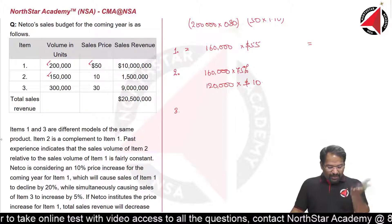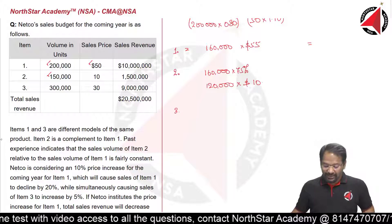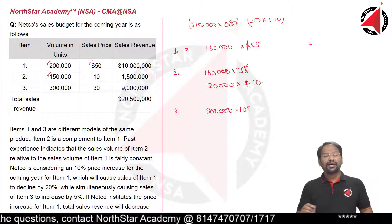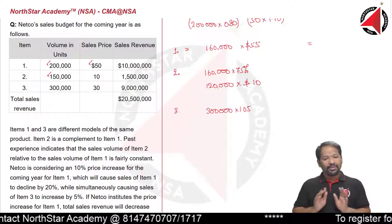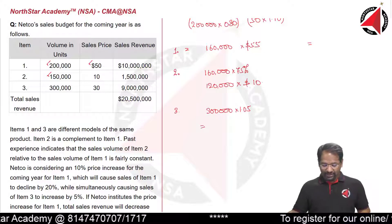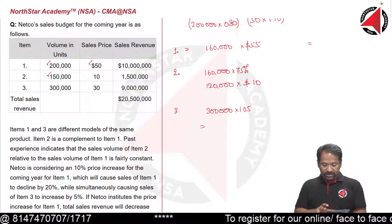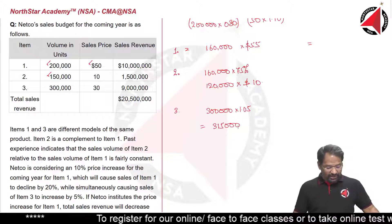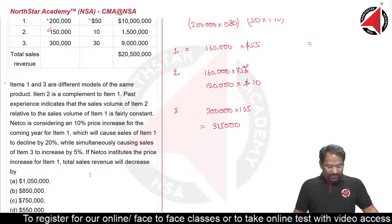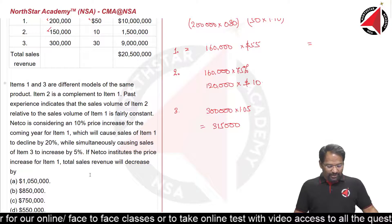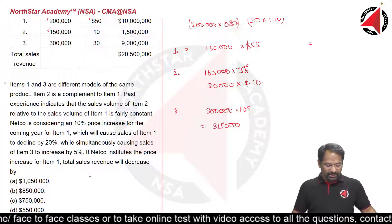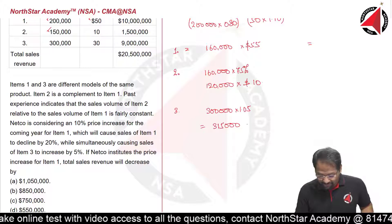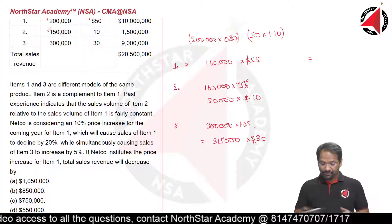For Item 3, the question states that the price increase for Item 1 simultaneously causes sales of Item 3 to increase by 5%. Current sales of Item 3 are 300,000 units, so the new quantity is 300,000 multiplied by 1.05, giving 315,000 units. There has been no change in the price of Item 3, so it remains at $30.